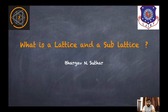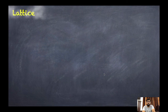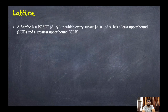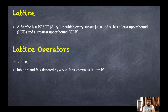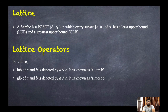We will also discuss a sublattice. So as revision: a lattice is a poset (L, ≤) in which every pair of the given set has the LUB as well as the GLB. In a lattice, the LUB of a and b is denoted by a ∨ b, known as 'a join b', and the GLB of two elements is denoted by a ∧ b, known as 'a meet b'.